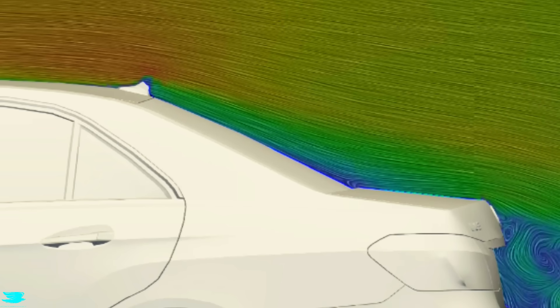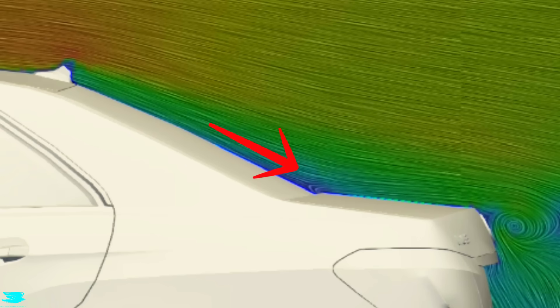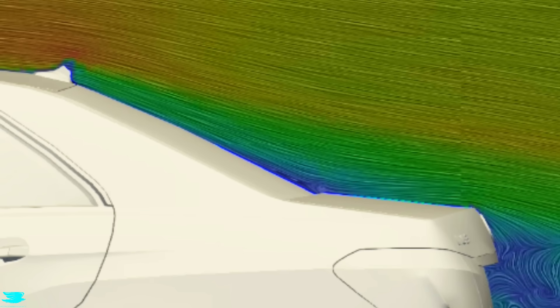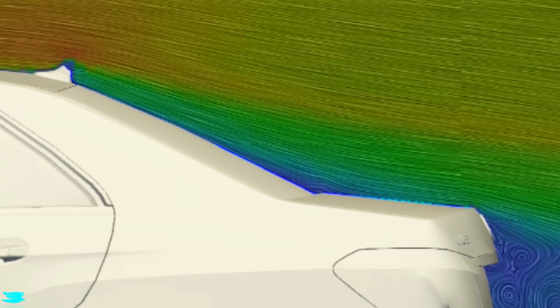For drag that is quite bad, but we'll get to that. First the lift, because this is so flat, when the flow over the window comes down it slams into the trunk. If the trunk were more in line with the rear window, the flow wouldn't hit the trunk as much. That's important because the more the flow hits the rear, the more its energy gets converted into static pressure. That is why we get this red region here.